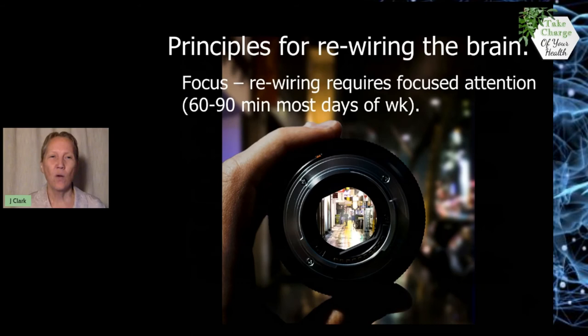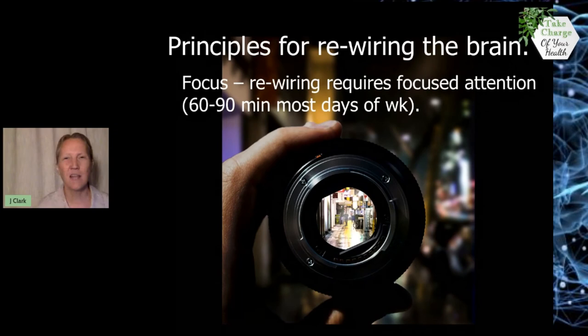Here are some principles about rewiring the brain. Sort of a summary. The first principle is focus. Your brain, you cannot build brain plasticity by doing something that's mindless, something that you can have a conversation while you're doing it. You need to have total focused attention. So you need to pick something brand new to do, say, like learning a piano, and spend 60 to 90 minutes most days. How many is most? Four out of seven. So four or more days a week, spend 60 to 90 minutes learning something completely new. And it could be physical, it could be mental, or it could be spiritual. But the more complex, the better.